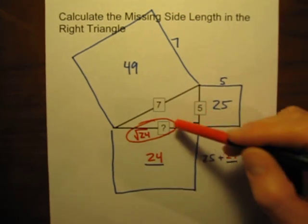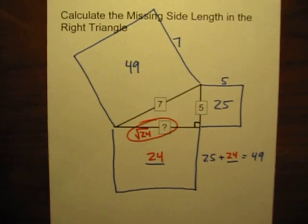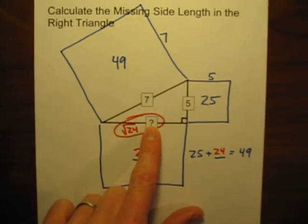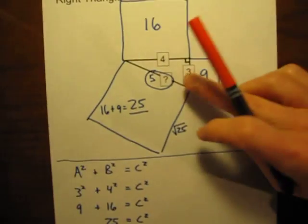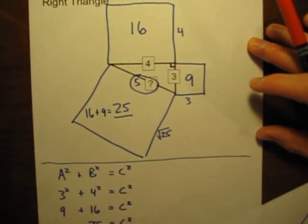So be careful. Make sure you identify what side of the triangle is missing. Here it was a leg that's missing. In my first example, it was the length of the hypotenuse that was missing.